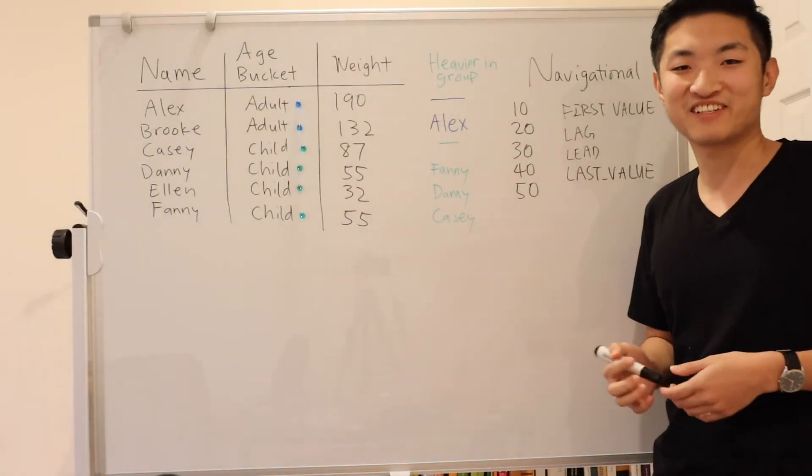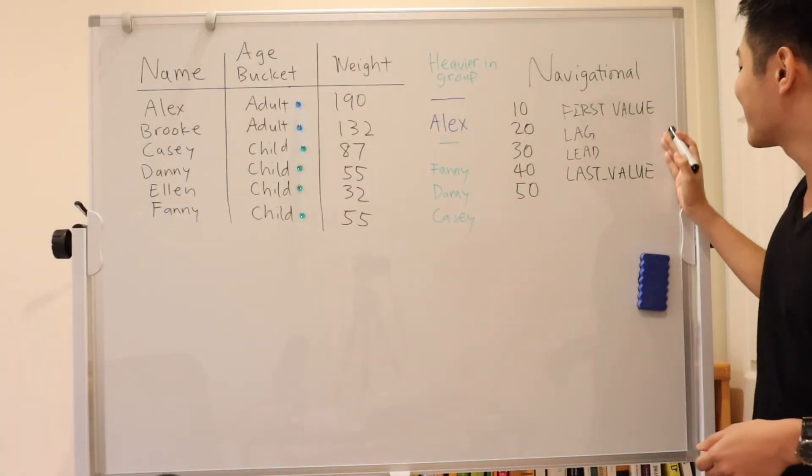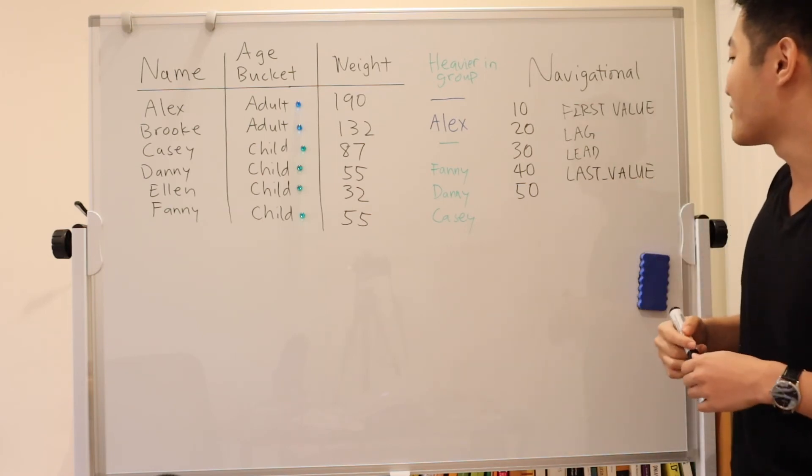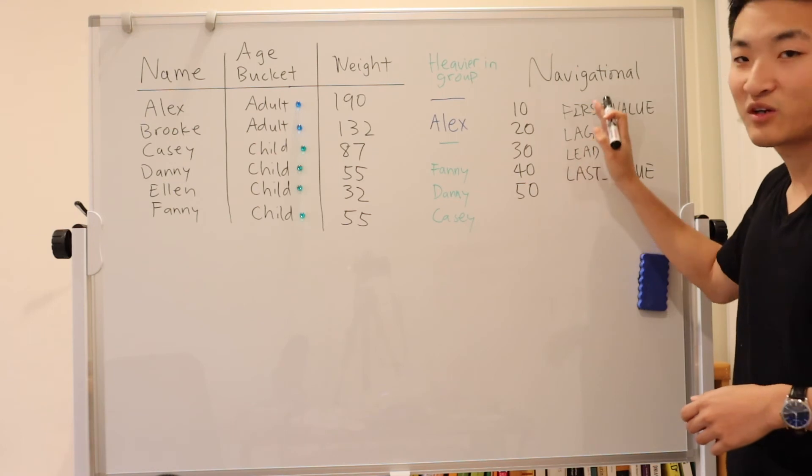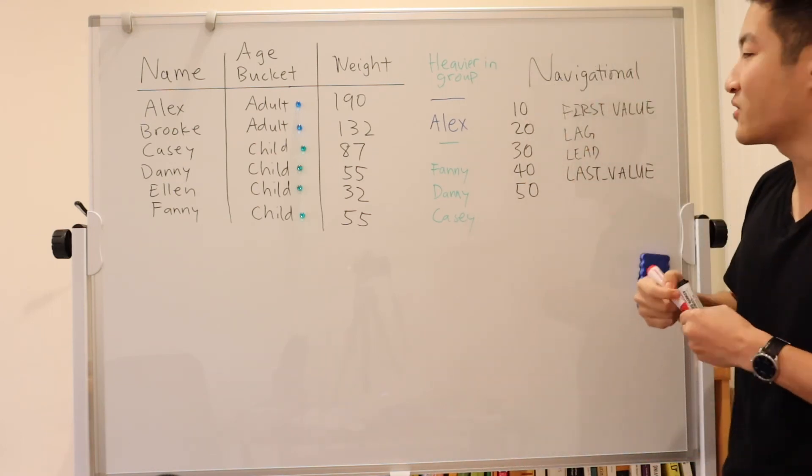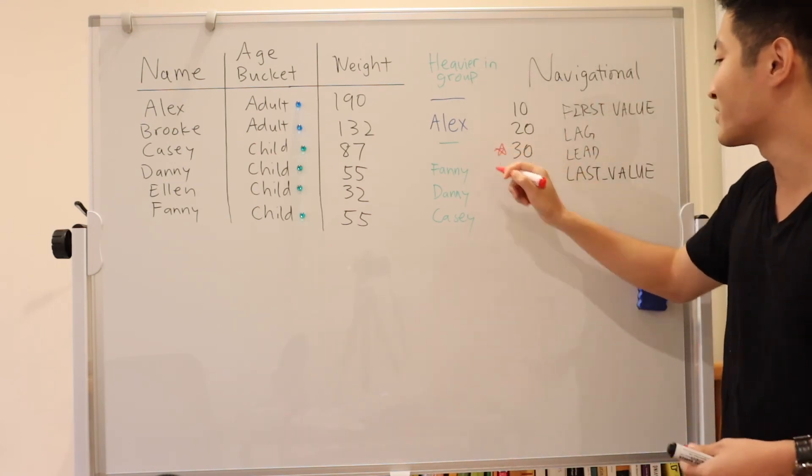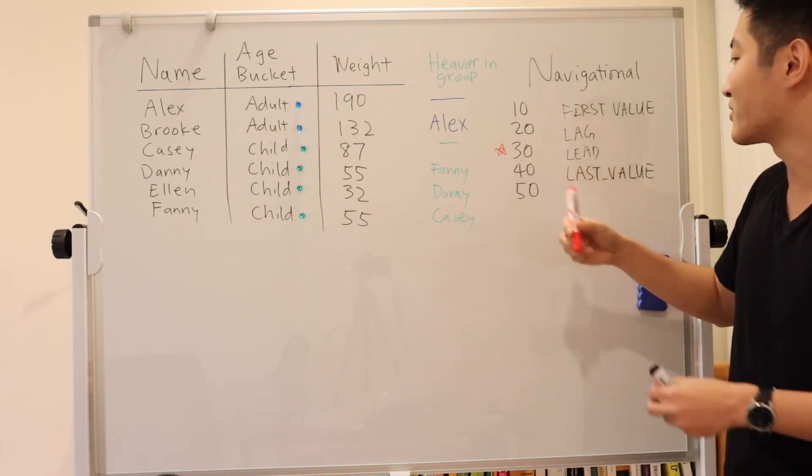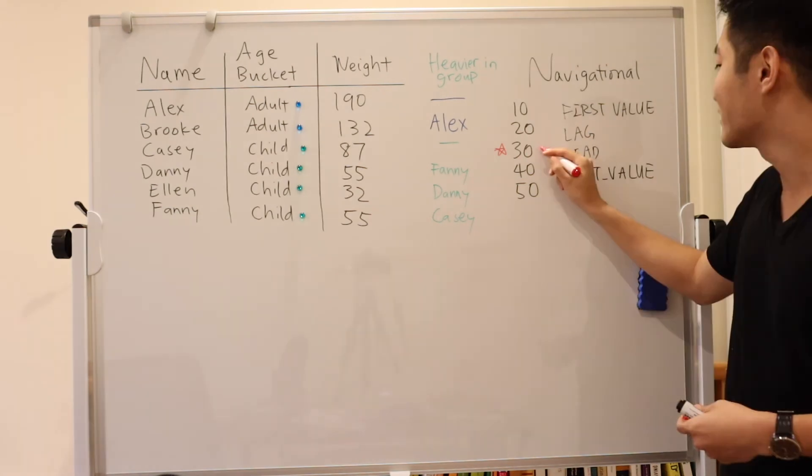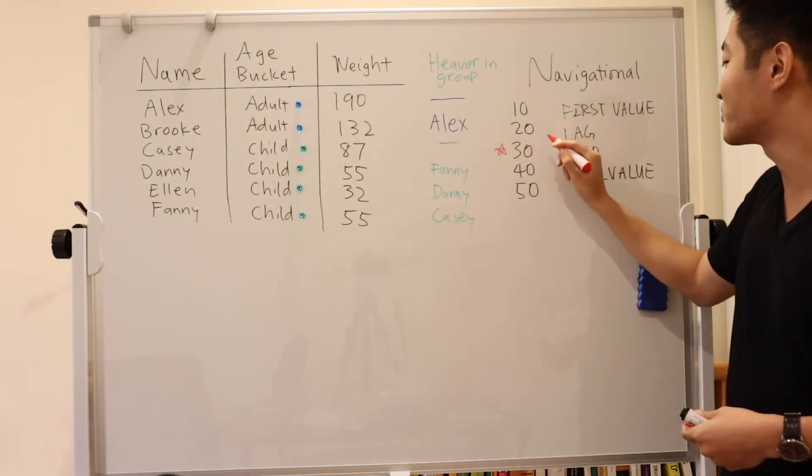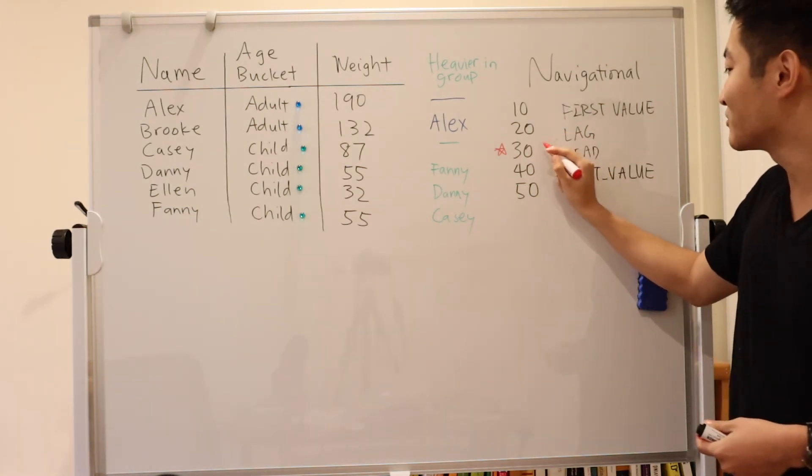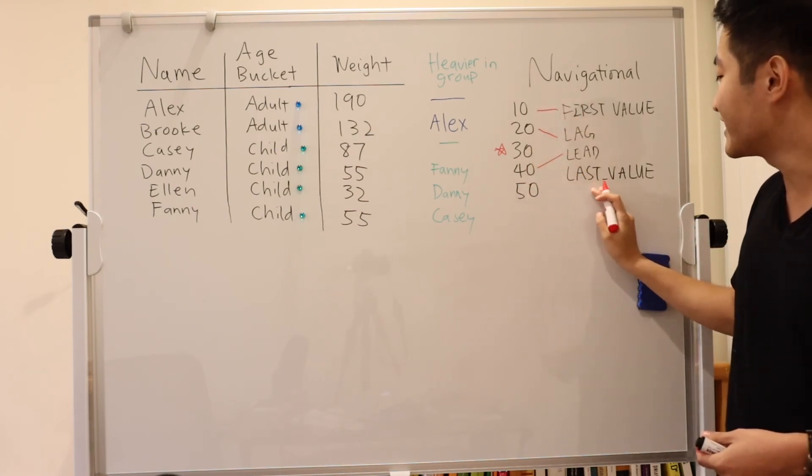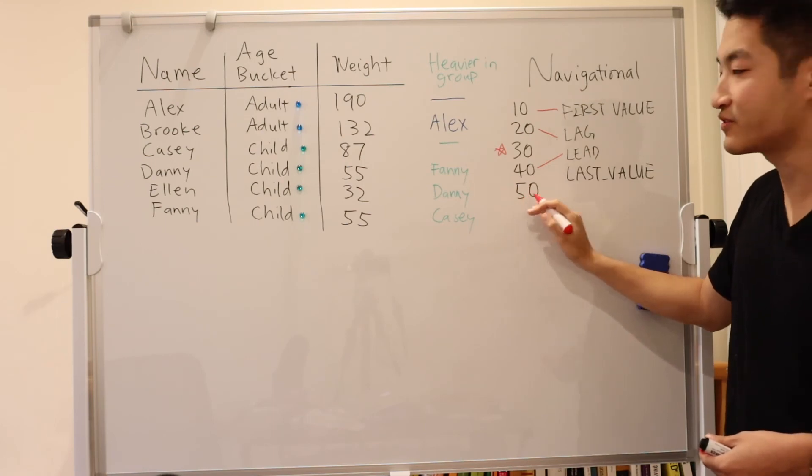Finally, let's go through navigational functions. So these are a few navigational functions you can use with analytic functions. And what do they correspond to? So let's say the row you're looking at is this row number 30. Then the first value of this row will be 10, lag of 30 will refer to 20, lead of 30 will refer to 40, and last value of 30 will refer to 50.